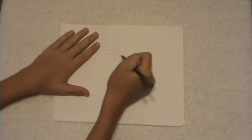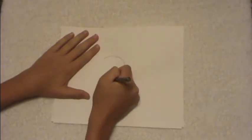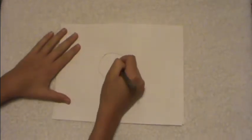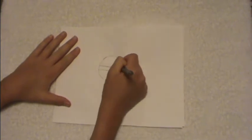Then kind of decorate how you want. I'm just kind of drawing a little circle and then a teeny dot and kind of like a stripe. Make it look like a Pokeball.